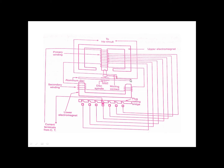On the upper magnet there are two windings: a primary and a secondary. The primary winding is connected to the secondary of the CT. This primary winding is connected to the current terminal from the CT on the line to be protected. The winding is tapped at intervals.